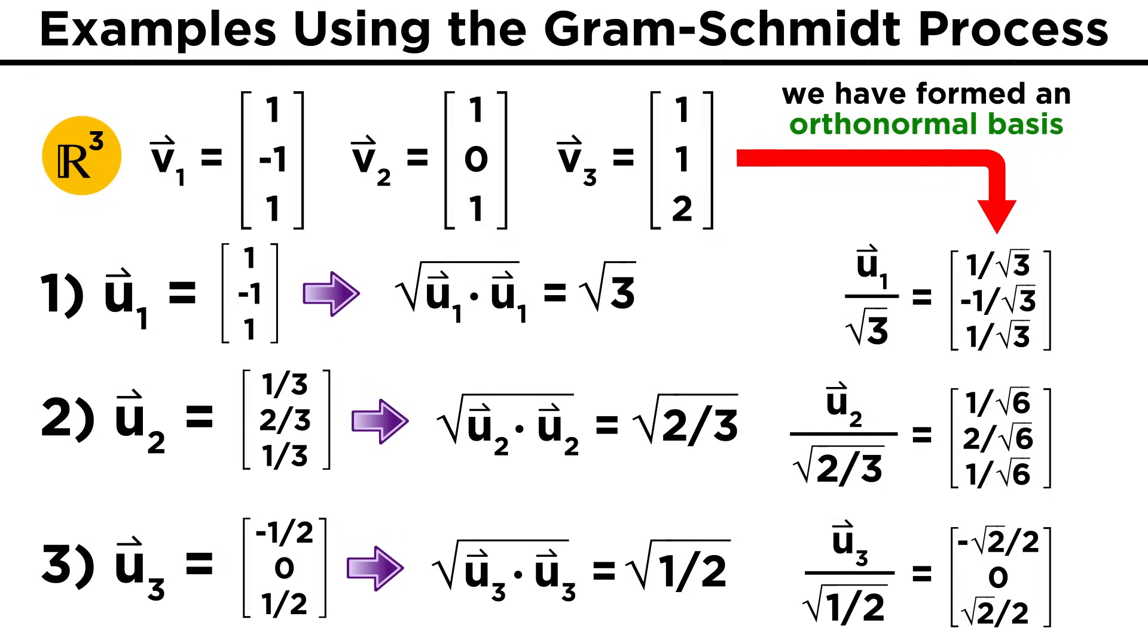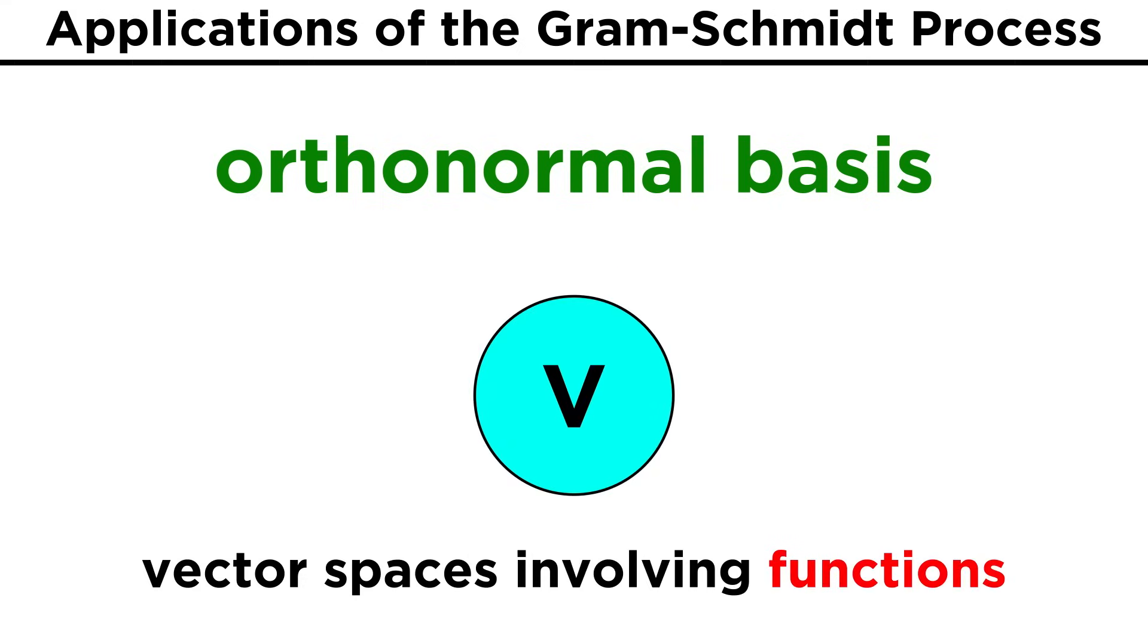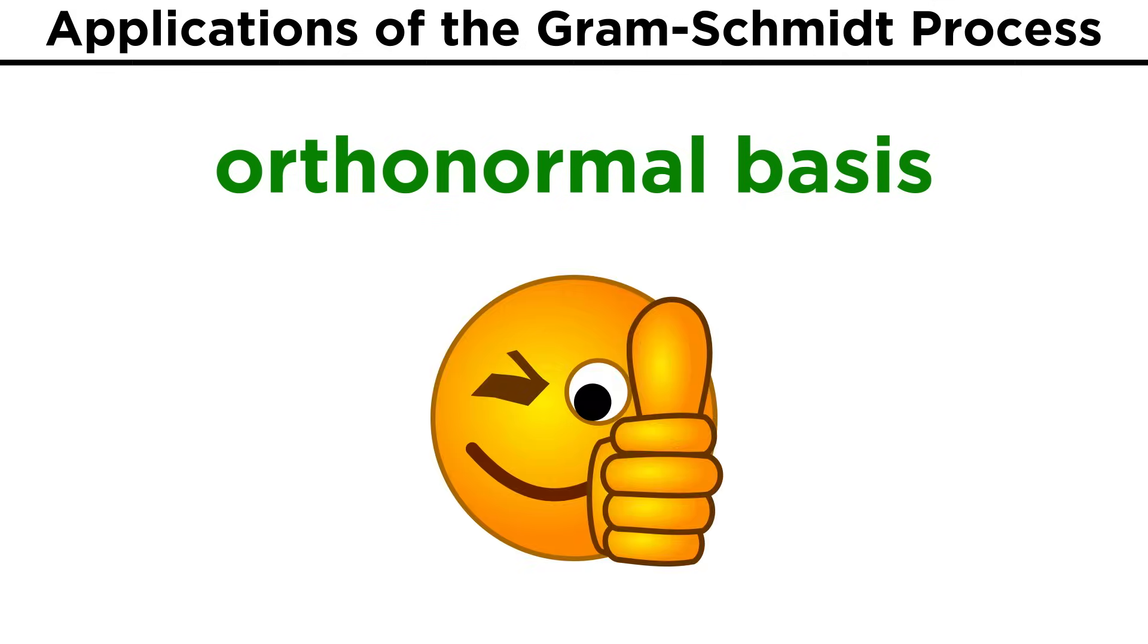These are the orthonormal basis vectors we obtain from our original basis thanks to the Gram-Schmidt process. Being able to generate an orthonormal basis is a useful tool, as the bases themselves can be very helpful for certain calculations. This process also works for different kinds of vector spaces, such as ones involving functions, it just changes how we compute the inner product. Now that we've gone over the process of finding an orthonormal basis from any existing basis vectors, let's check comprehension.